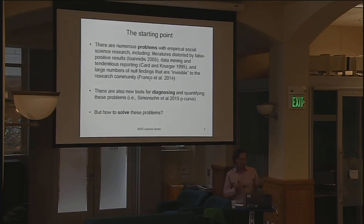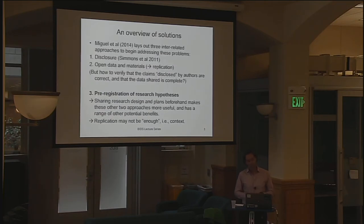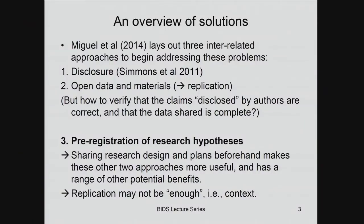Those are the problems. We're figuring out new ways of diagnosing them, but I'm going to discuss one possible way of beginning to solve some of these problems. I was involved in a paper that came out in Science a couple years ago that talked about three different sets of approaches that might improve transparency and reproducibility in social science research. The first is what's called disclosure — really increasing the reporting requirements for researchers, trying to set up a norm of full disclosure of research designs and full disclosure of data.